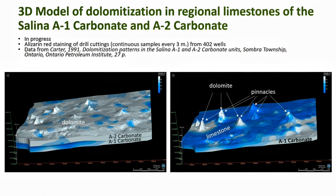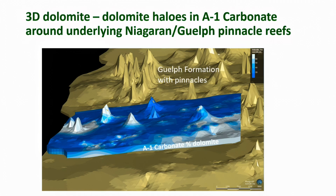As a preview of progress on the next and probably the last 3D model in this series, it is a 3D model of dolomitization in the regional limestone of the Salina A1 carbonate and A2 carbonate. This study is in progress, and what is shown here are the results of alizarin red staining of drill cuttings from 400-plus wells — legacy data acquired in 1991. A subsequent slide shows percent dolomite in the A1 carbonate, with a dolomite contour interval of 20 percent, revealing dolomite halos in the A1 carbonate around and over pinnacle reefs in the underlying Niagaran and Guelph formations.